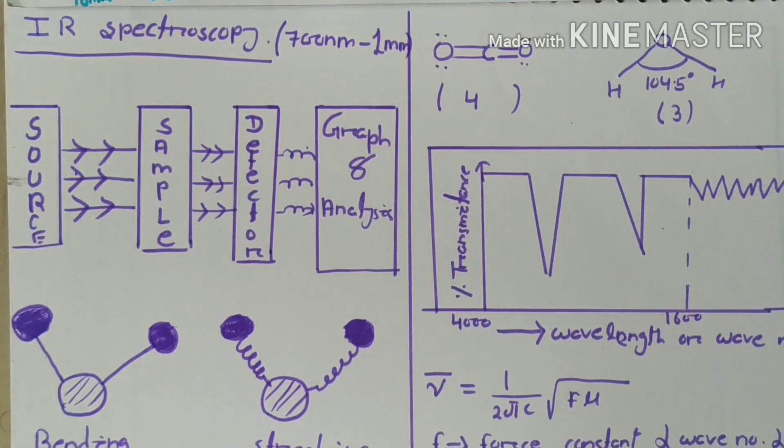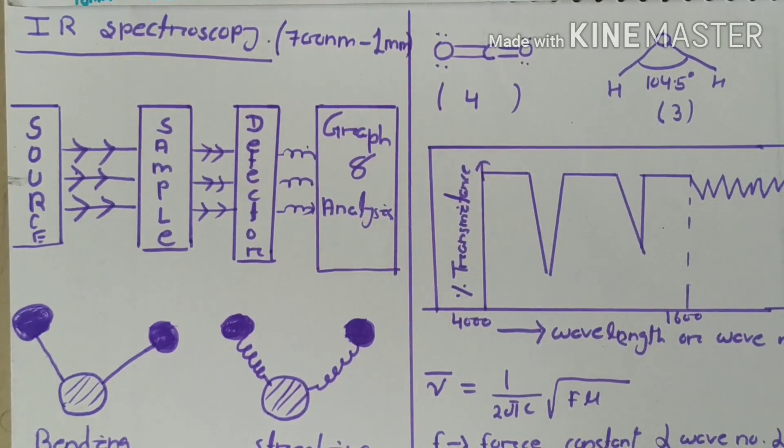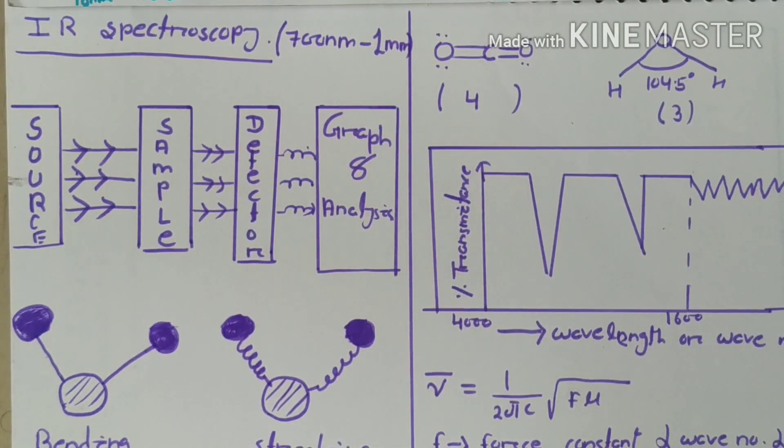Hey guys, in this video tutorial we will be learning about IR spectroscopy. IR spectroscopy is a device that is used to analyze different types of molecules and compounds. IR is ideally used as it has a wavelength that falls between 700 nanometers to 1 millimeter.